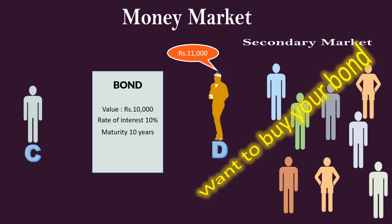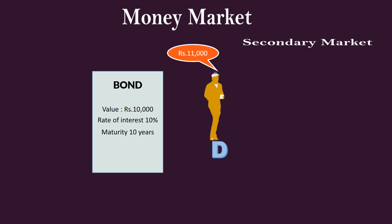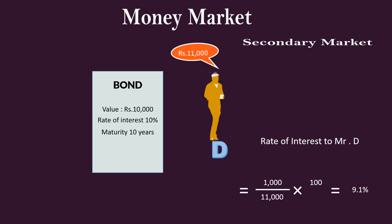D is the new owner of the bond. D continues to receive 1,000 rupees by way of interest, calculated on the coupon rate of 10% applied on the face value of 10,000 rupees. But from the point of view of D, the interest income of 1,000 rupees accrues from 11,000 rupees. He calculates the rate of interest as 1,000 divided by 11,000 multiplied by 100, which equals 9.1%. For D, the market rate of interest is 9.1%, which is less than the coupon rate.